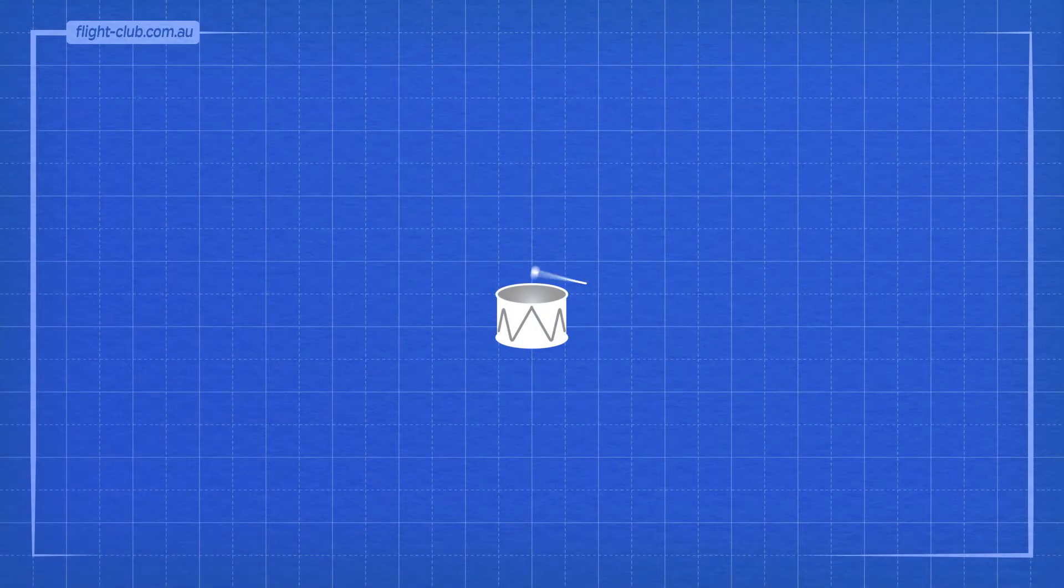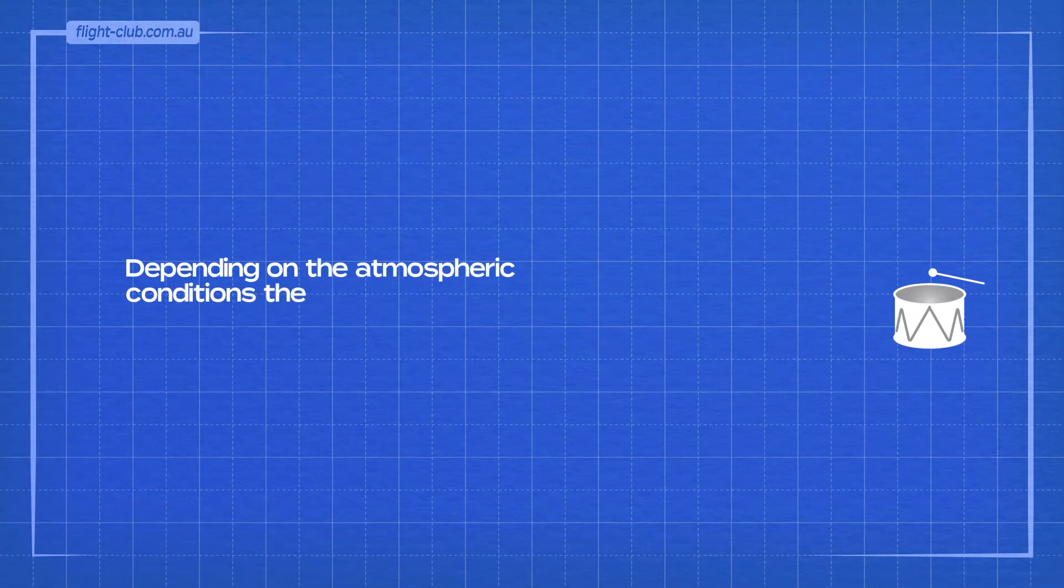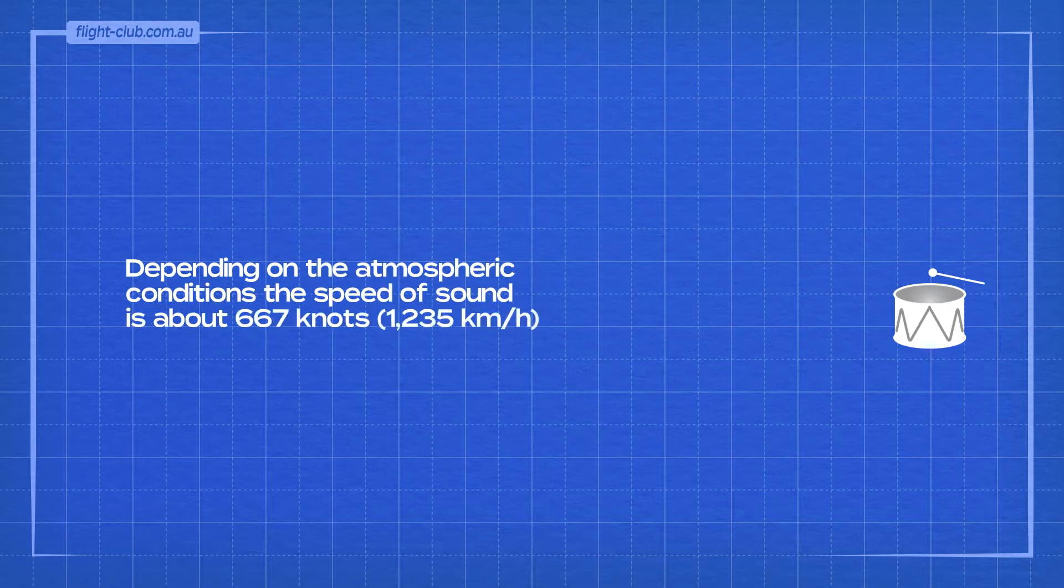The speed of sound is the distance travelled by a sound wave per unit of time as it propagates through the air. Depending on the atmospheric conditions, the speed of sound is about 667 knots.